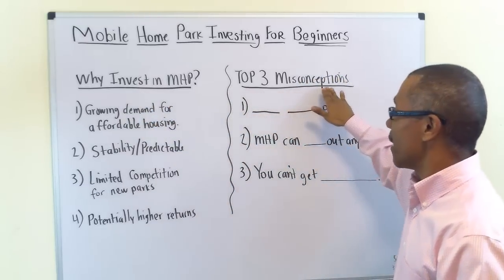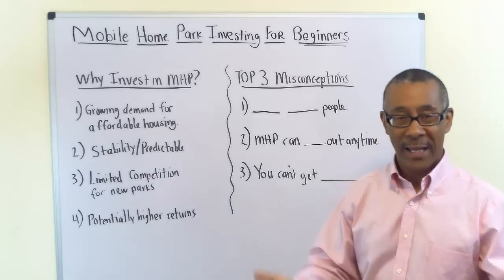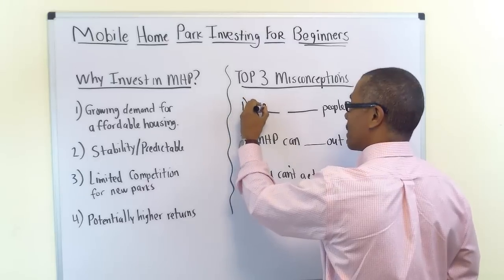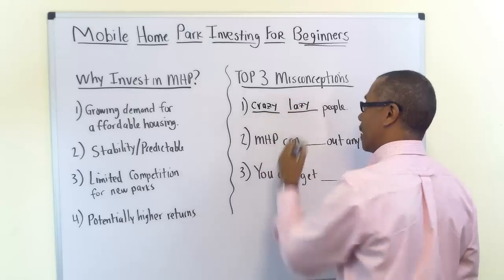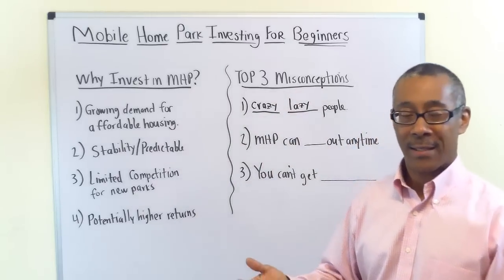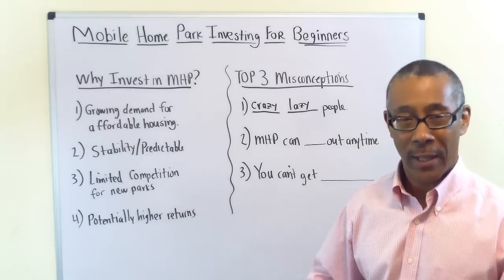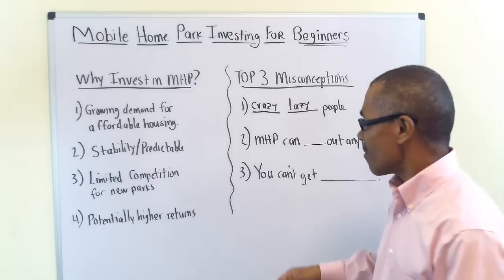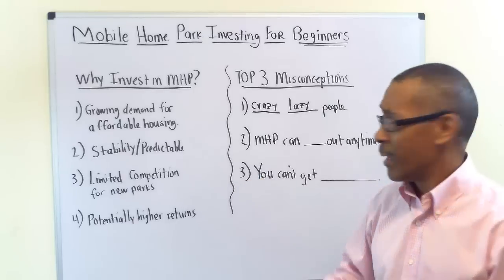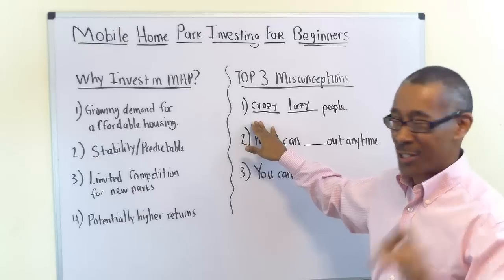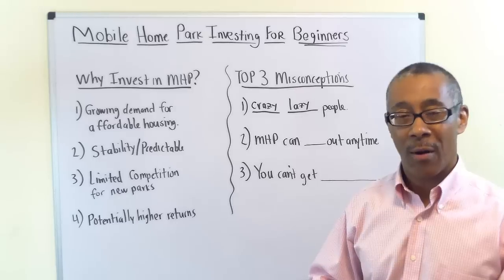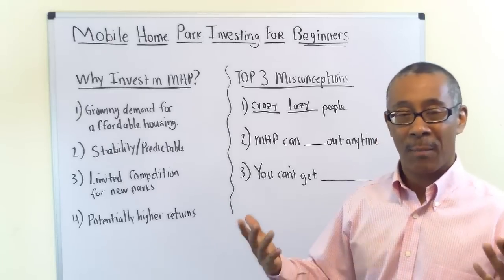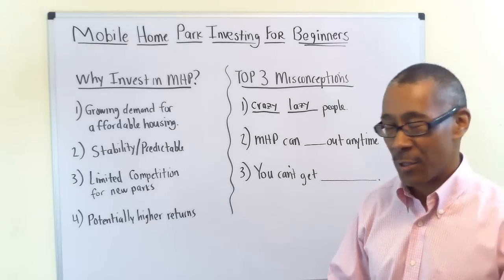The top three misconceptions of mobile home parks. Number one: the misconception that mobile home parks are filled with crazy, lazy people. Did you know there are mobile home parks in Hollywood, California and in Malibu right on the beach, inhabited by Sean Penn and other wealthy Hollywood types? The average person in a mobile home park has an average job, average income, and average family — they're just like you and I. This is a misconception.